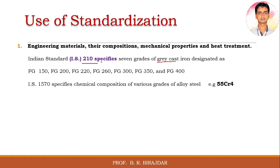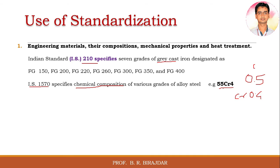For gray cast iron we use Indian Standard IS 210, and Indian Standard IS 1570 specifically covers the chemical composition of metals and alloys. For example, taking 55CR4: the 55 means 100 times the carbon content, so dividing 55 by 100 gives 0.55% carbon; and CR4 means 10 times the chromium content, so dividing 4 by 10 gives 0.4% chromium. This chemical composition notation is included in Indian Standard IS 1570.